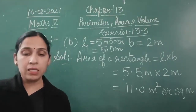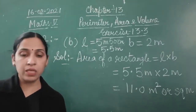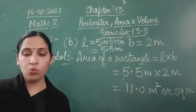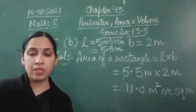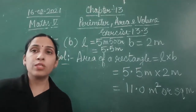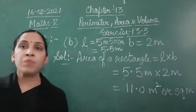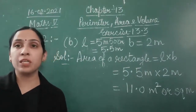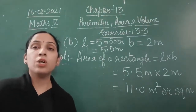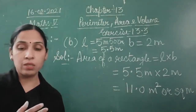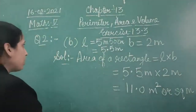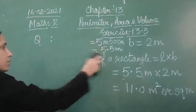Now Question 3: calculate the area of squares whose sides are given — 6 mm, 10 m, and 110 cm. It is quite easy for a square because you don't have two different units to deal with. In a square, the same side is multiplied twice, so there's no chance of confusion. Let's start Question 3.